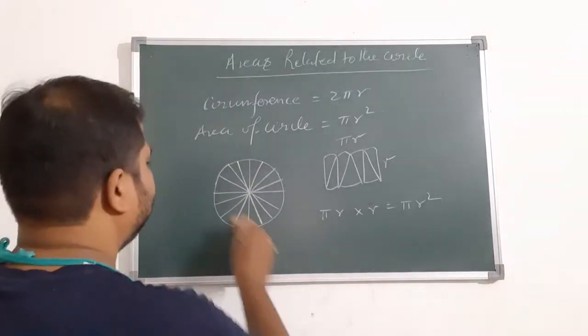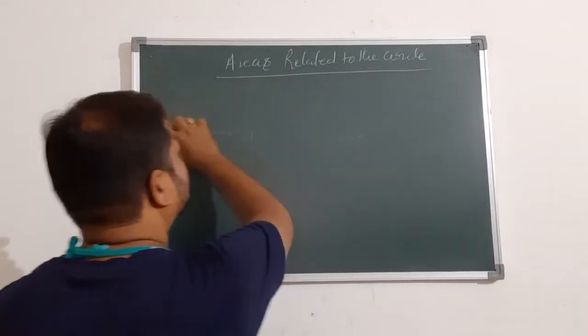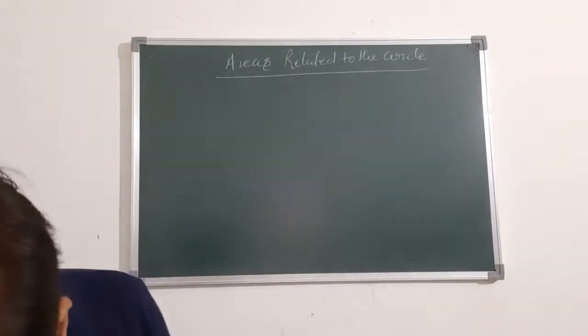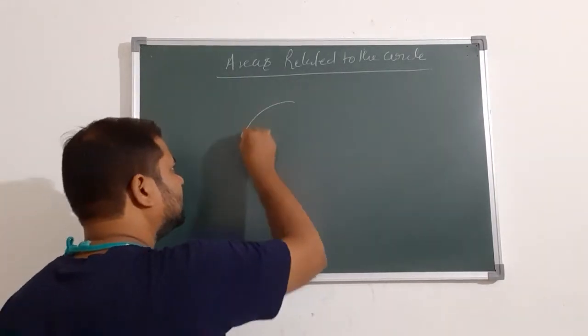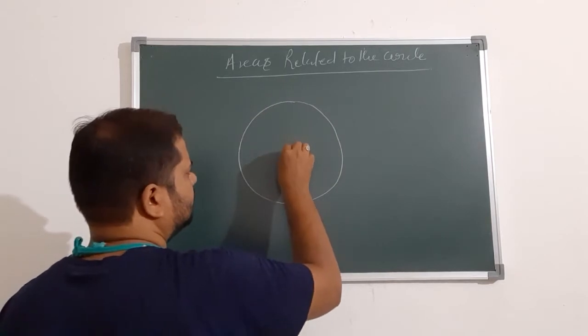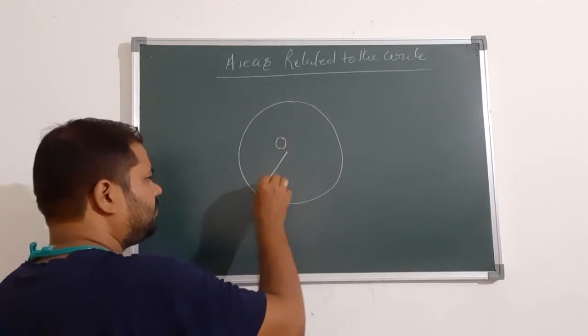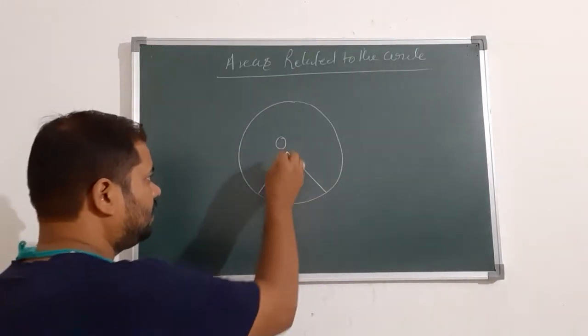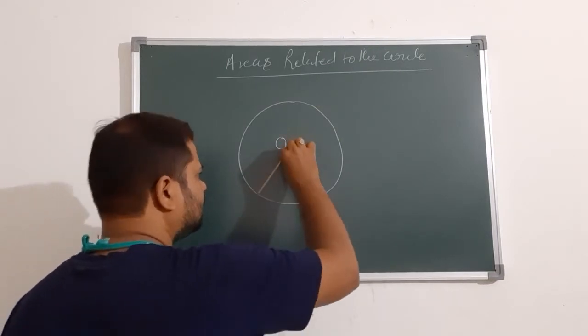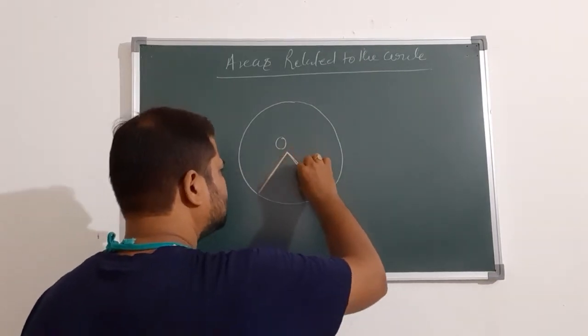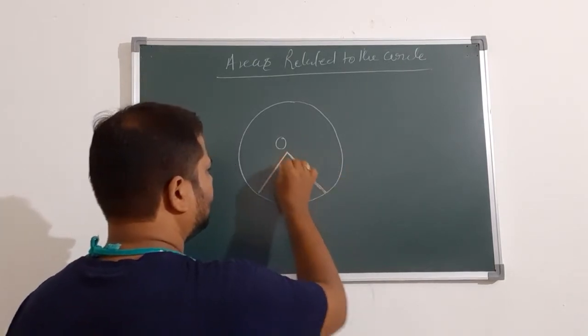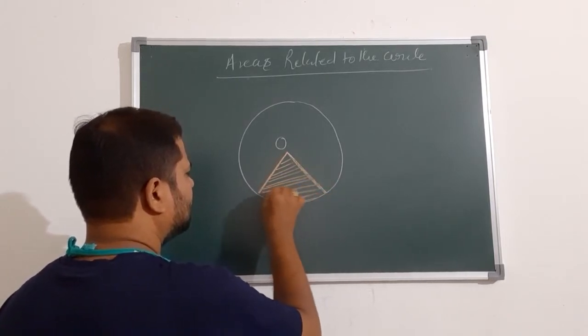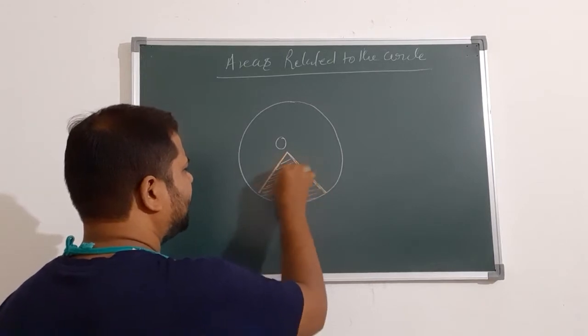Now see what is the sector of the circle. This is the circle, this is the center, then this particular part is known as sector of a circle and this is minor sector.